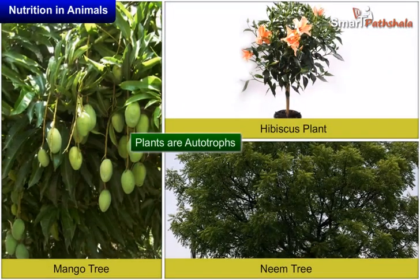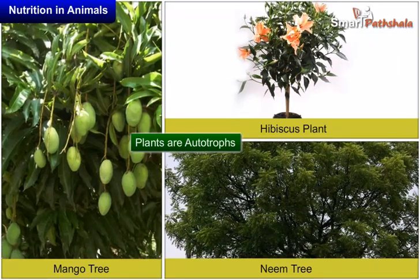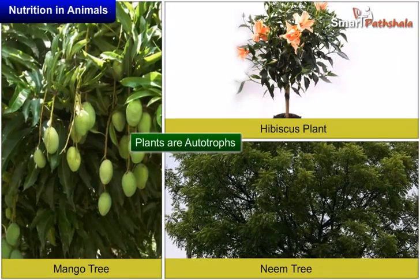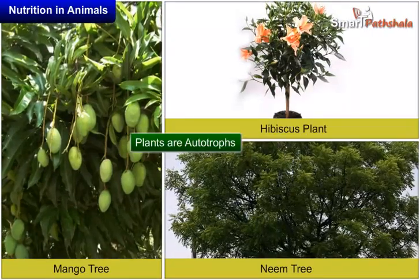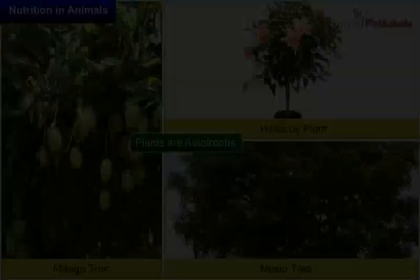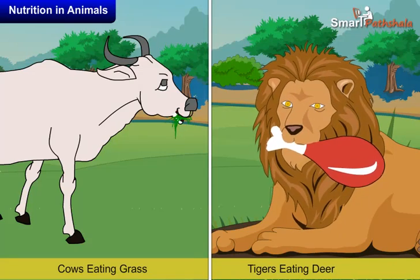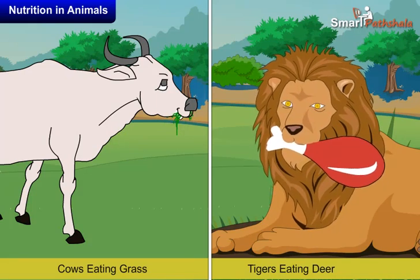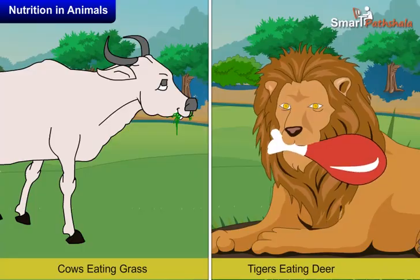As we already know, mostly plants are autotrophs and they can prepare their own food by the process of photosynthesis. Animals are heterotrophs and animals get their food from plants either directly by eating plants or indirectly by eating animals that eat plants.